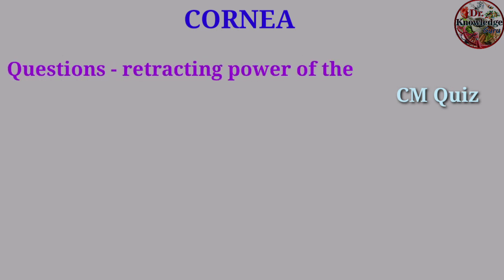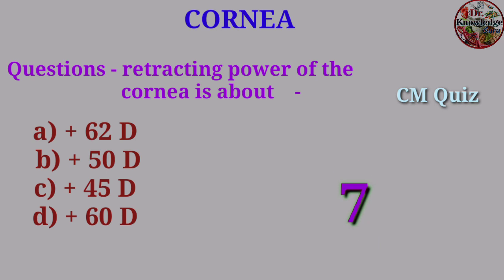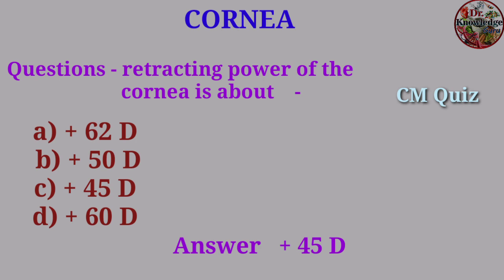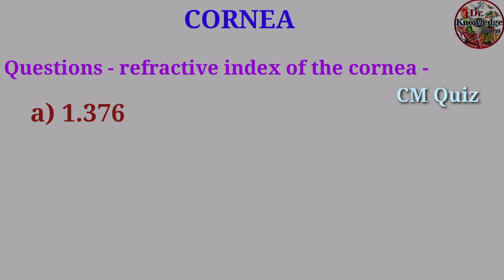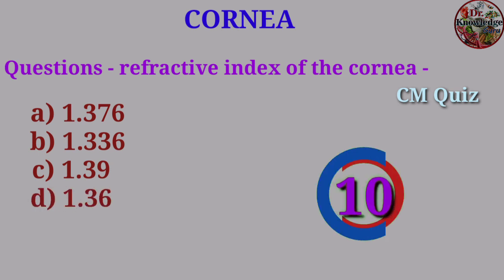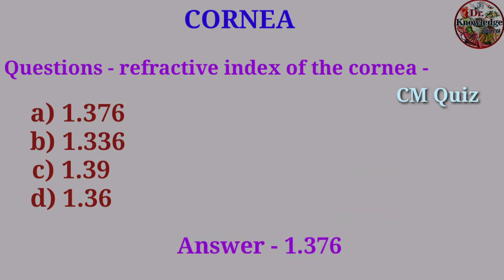Question: Refracting power of the cornea is about — A. +62 diopter, B. +50 diopter, C. +45 diopter, D. +60 diopter. Answer: +45 diopter. Question: Refractive index of the cornea — A. 1.376, B. 1.336, C. 1.39, D. 1.36. Answer: 1.376.